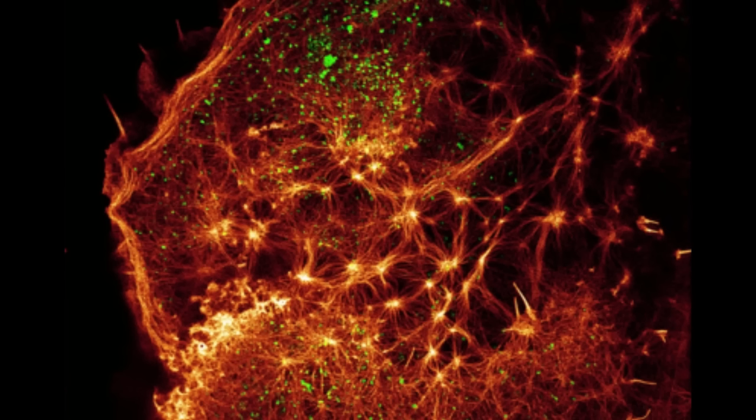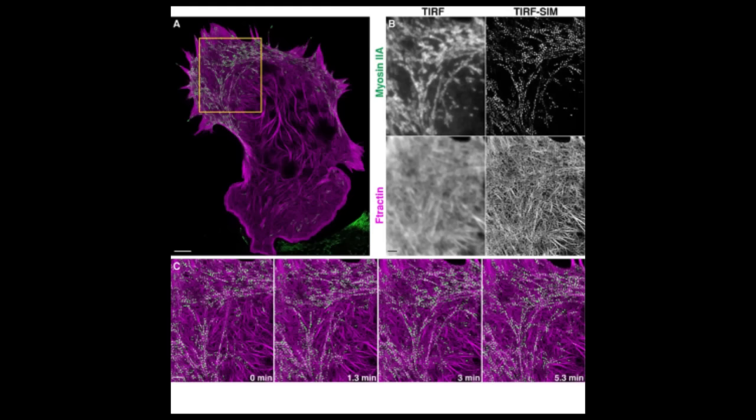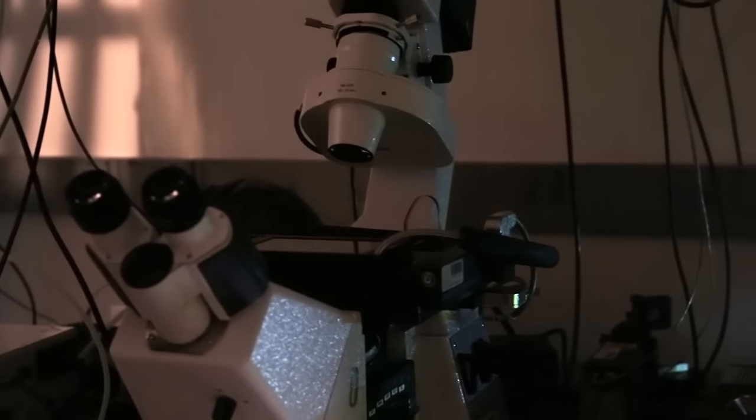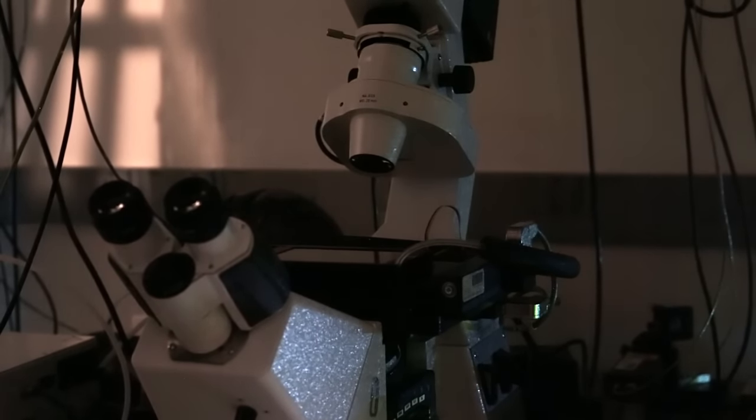So the researchers decided to work on structured illumination microscopy to improve upon its 100 nanoscale resolution using two different methods. First, the team used a lens of ultra-high numerical aperture, which increased the microscope's conventional resolution and, in the same proportion, its resolution in SIM.